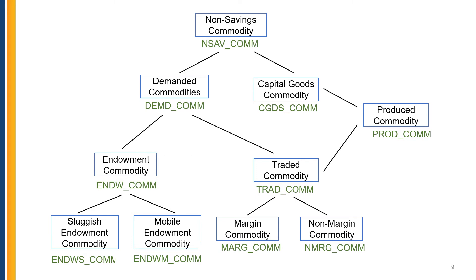From top to bottom, as we saw earlier, there are two subsets in the demanded commodities, which are endowment commodities and traded commodities. Endowment commodity includes sluggish and mobile endowment, and traded commodity includes margin and non-margin commodity.